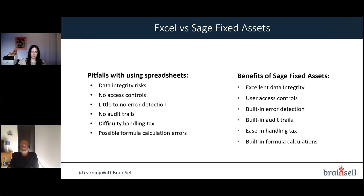Sage Fixed Assets has excellent data integrity with granular user access control — you can limit who can set period closes, perform disposals, or transfers. It has a well-defined history tab capturing all asset changes, plus Sarbanes-Oxley compliant reporting so you can see across multiple companies who changed acquisition values, depreciation methods, lives, and more. Tax rules are built in and enforced — for example, vehicle limits for electric automobiles and trucks are built into the system.